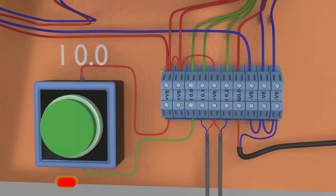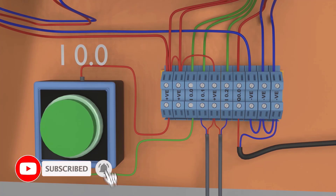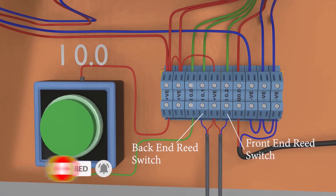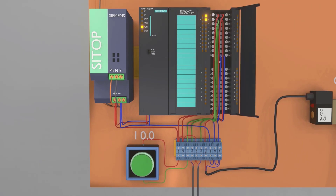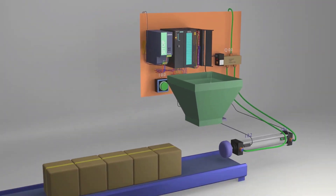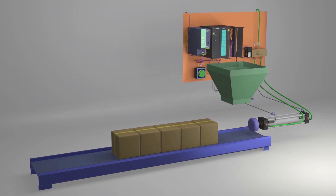The push button at I0.0 will be used to start the process. All the wires are connected at the terminal strip — the front end reed switch at I0.2, the back end reed switch at I0.1, and the solenoid valve coil at Q0.0. Now let's go to the SIMATIC Manager software and write the program for today's project.